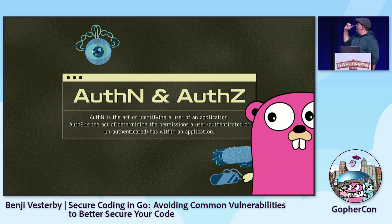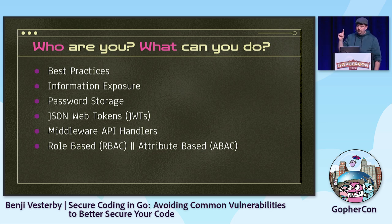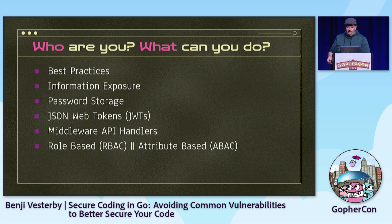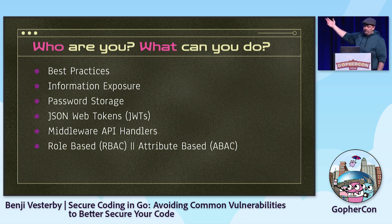Let's talk about authentication and authorization. Authentication is the 'who are you,' and authorization is 'what can you do.' If you are not a security expert, do not build your own authentication or authorization. If you work for an enterprise, go pay somebody good at it — like Auth0 — because when they get hacked, they know how to fix it. Sign JWTs. Set up middleware API handlers to handle authentication and authorization so a new engineer on the team can't accidentally bypass those.